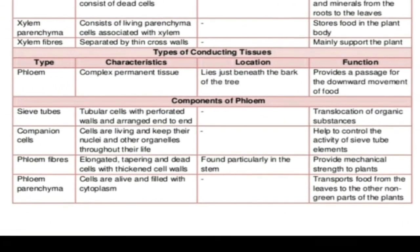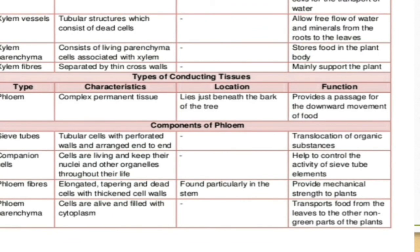Phloem transports photosynthetically prepared food. The food prepared in the chloroplasts of the mesophyll cells is transported by the phloem. Phloem has three living components and only one dead component. The living components are sieve tube cells, companion cells, and phloem parenchyma. Sieve tube cells help transport organic substances — mainly glucose. Companion cells control the function of sieve tube cells. Phloem fibers provide mechanical strength.